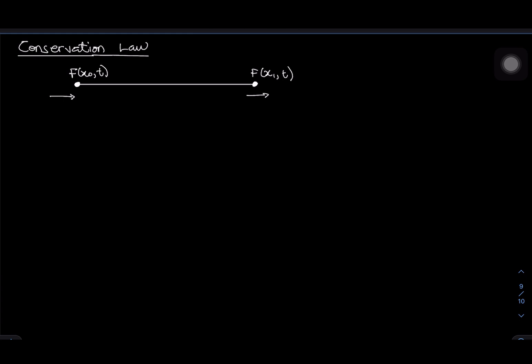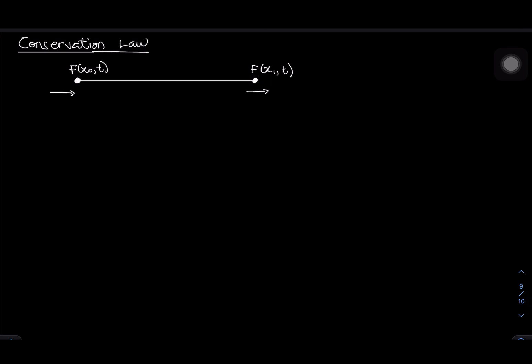I'm going to start with just a one-dimensional space — just this line over here with two points at the end. Assuming that f is an amount of substance, what is happening here is that we have some amount of substance that is actually flowing from this point over here to that point. The substance could be anything — temperature or any kind of quantity you can think of in space that can be moving from one point to the other.